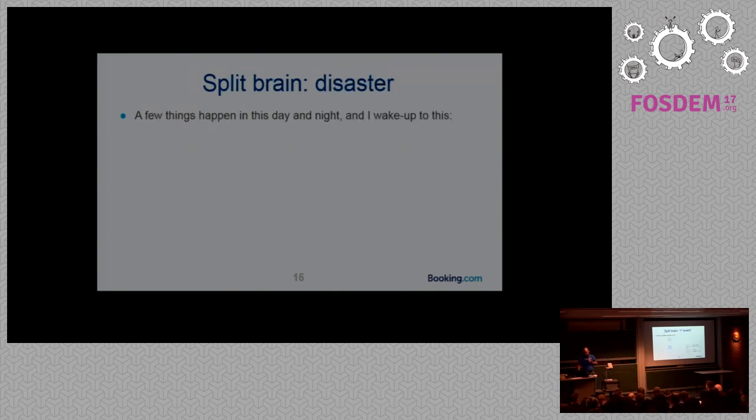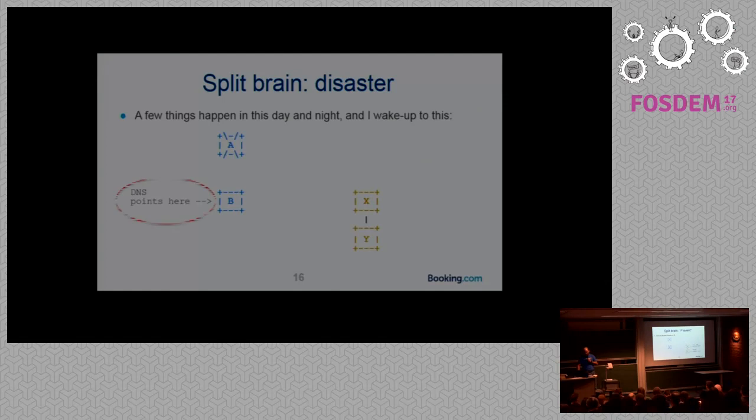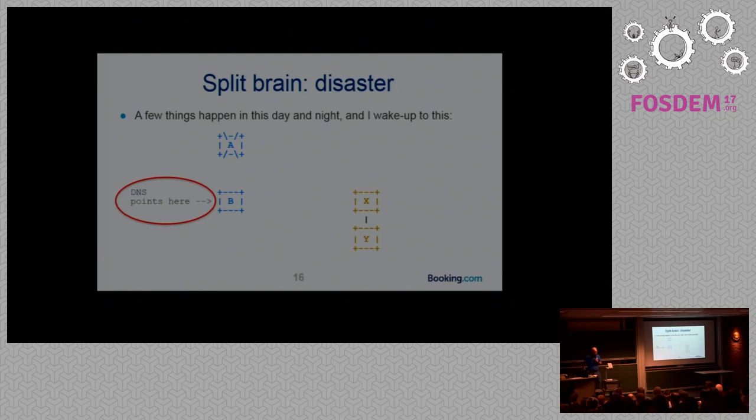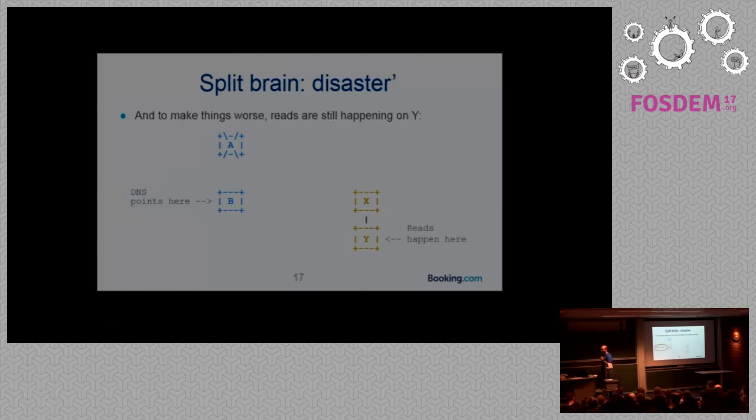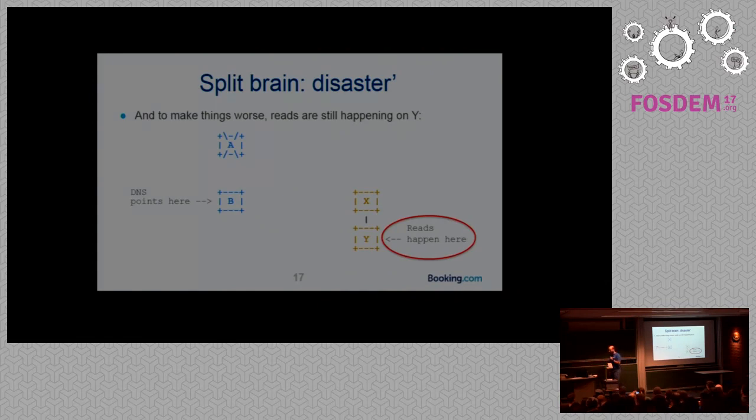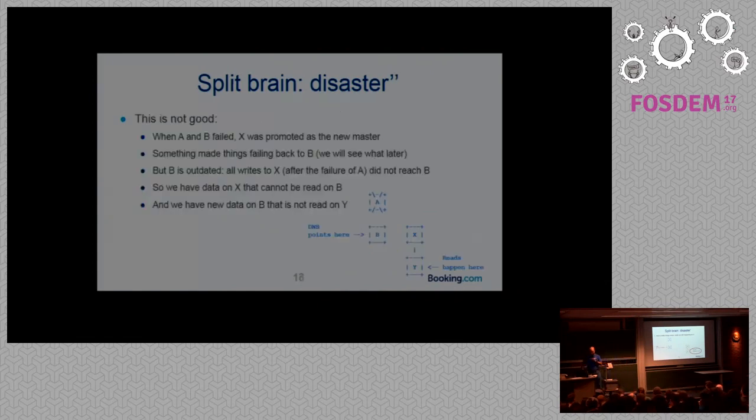At this point, it doesn't have to do a lot of things. It just needs to call the script that repoints DNS. So at that point, we can write again. And to fix the reads that were happening on B, that was actually done manually. So now we're back in a working situation. Writes happen on X, reads happen on Y, and everything is fine. So the day ends, we go back home. And something happened during the night. And I wake up to this.